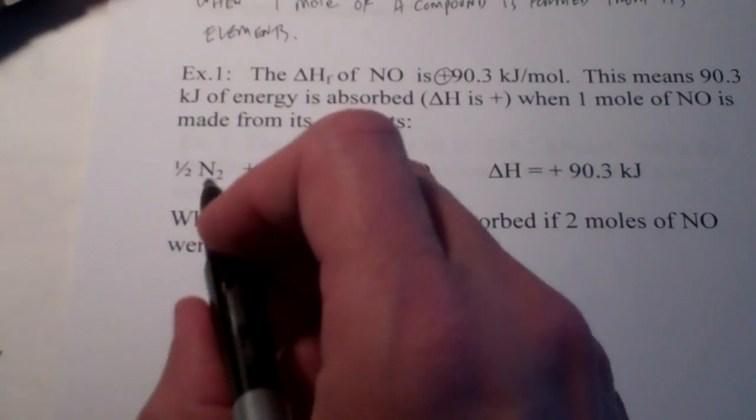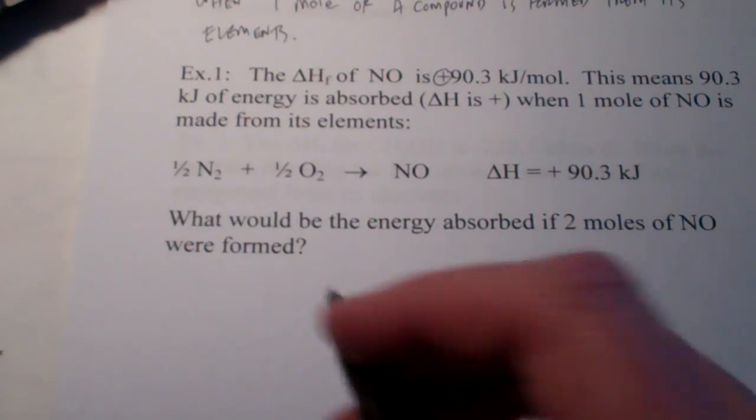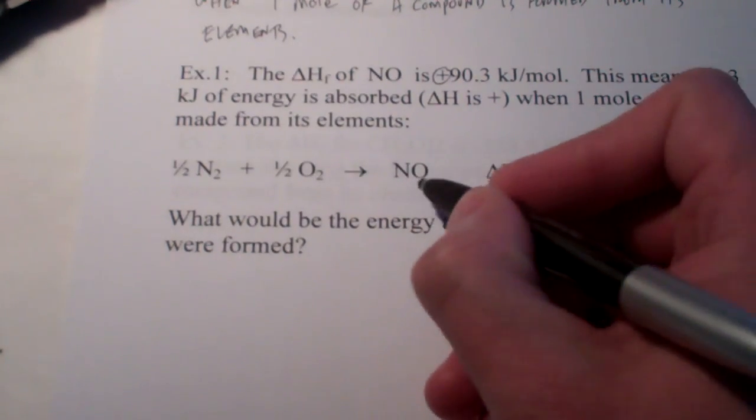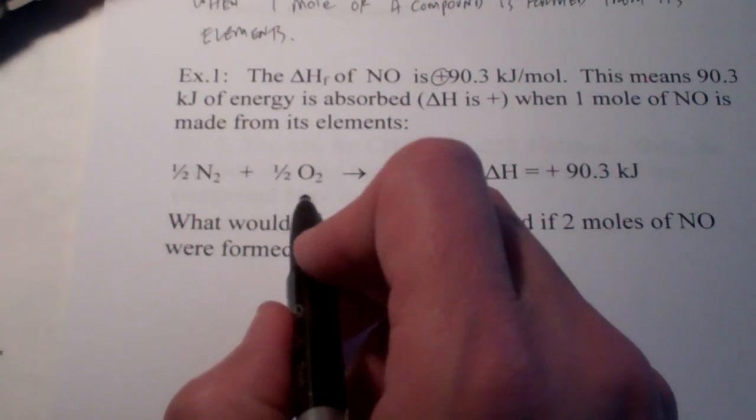What are the elements that make up nitrogen oxide? Well, of course. They're nitrogen and oxygen. You wouldn't think it would be barium and hydrogen, would you? Of course not. We're forming NO. So, the elements that make up that compound are nitrogen and oxygen.